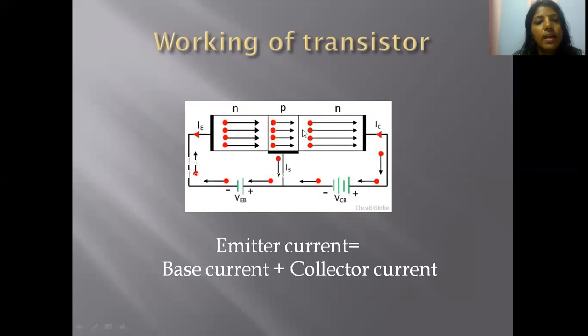In this way, the electrons that reach the collector flow to the positive terminal of the VCB battery, producing the collector current IC. Thus, we have three different currents: the emitter current IE, the base current IB, and the collector current IC.